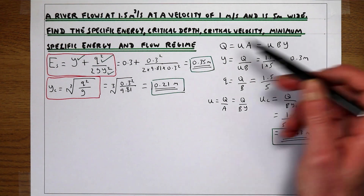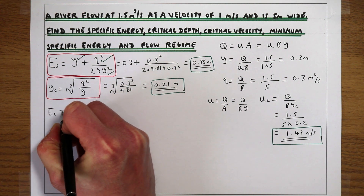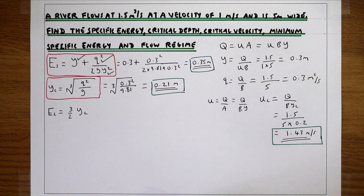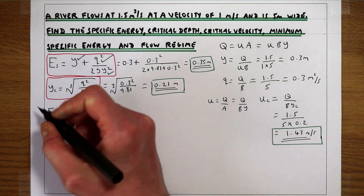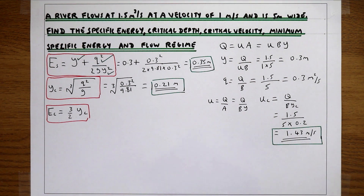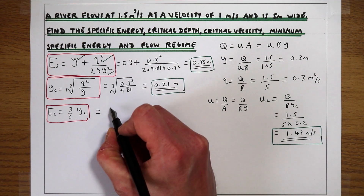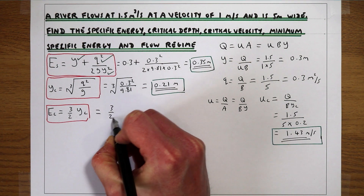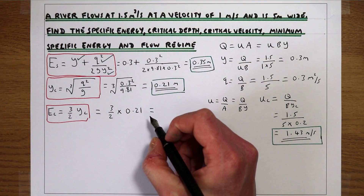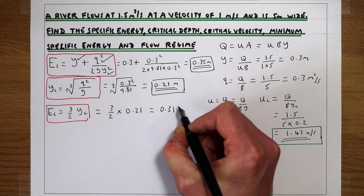The next question asks for the minimum specific energy. The generic expression is: minimum specific energy equals 3/2 times the critical flow depth. Our critical flow depth was 0.21 m, so minimum specific energy = 3/2 × 0.21 = 0.315 metres. This is the minimum possible specific energy the flow can have at this flow rate.